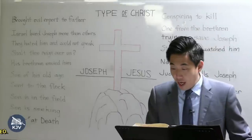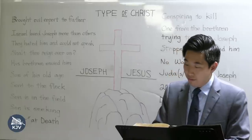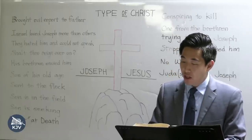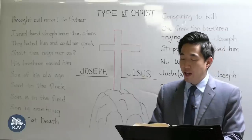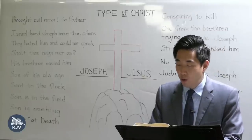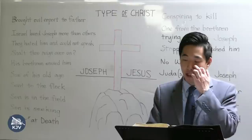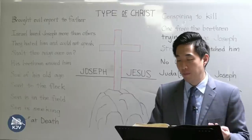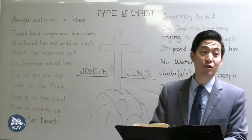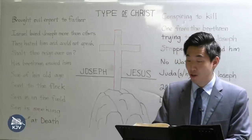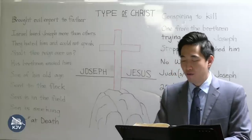Let's look at another thing at verse 5: 'And Joseph dreamed a dream and told it his brethren, and they hated him yet the more.' Joseph dreamed a dream and told his brothers. When he told them, the brothers really hated him even more than before.